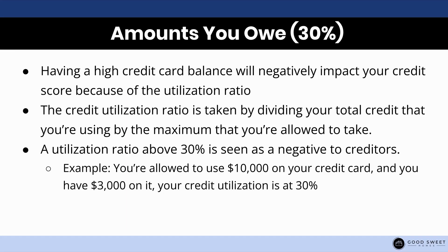The next one is the amount you owe, which accounts for 30%. This is also known as the utilization ratio — basically how much credit are you using based on what they allow you to use. If you're given an opportunity to spend $20,000 a month on a credit card and every single month you're at the $20,000 limit, you are a high-risk individual. They want you to have a high balance but not use a high balance. Having a high credit card balance will negatively impact your credit score, and anything above 30% utilization is seen as a negative to your creditors.